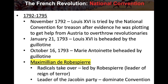The National Convention continues 1792 to 1795. In November of 1792, Louis XVI is tried by the National Convention for treason after evidence emerges that he was plotting to get help from Austria to overthrow the revolutionaries. On January 21st, 1793, Louis XVI is beheaded by guillotine — a huge deal, the king of France having his head cut off. On October 16th, 1793, Marie Antoinette is also beheaded by guillotine. The next man on stage is Maximilien de Robespierre.